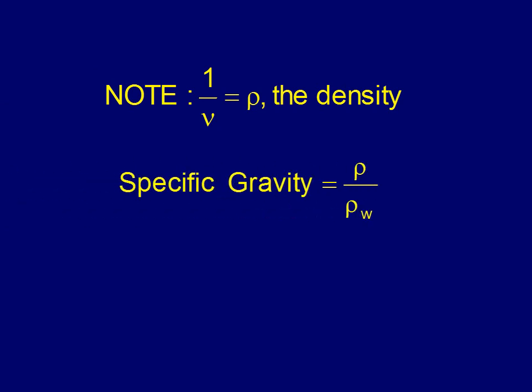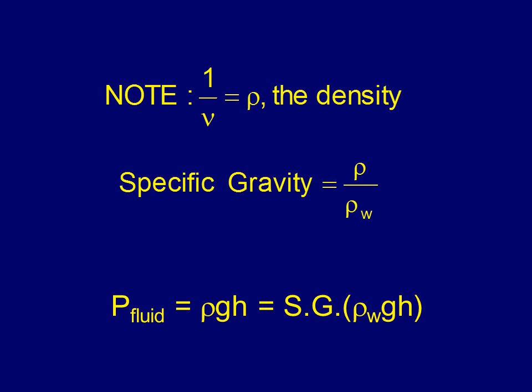Another concept is specific gravity — it gives a quick idea of how dense a substance is. If a substance has a specific gravity of 1.5, it's 1.5 times the density of water. Mercury has a specific gravity of about 13.8. Gasoline has a specific gravity of about 0.7–0.8 — it's less dense than water, so it floats. Ice is also less dense than water in solid form, which is why icebergs float.